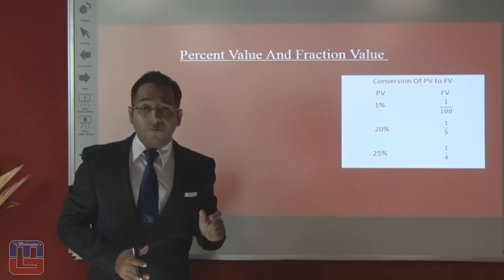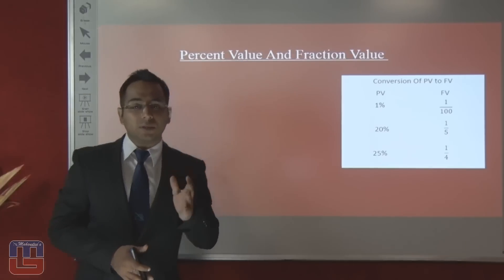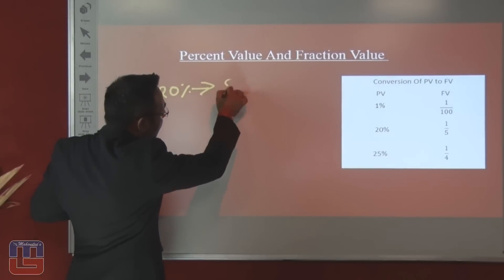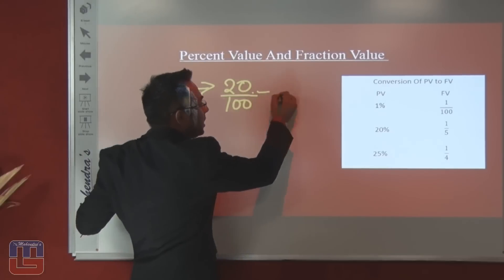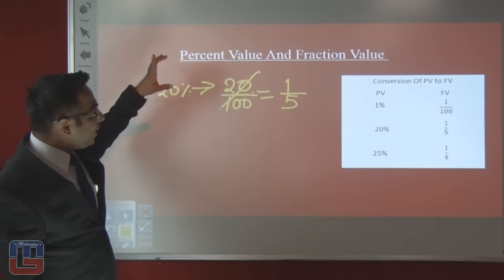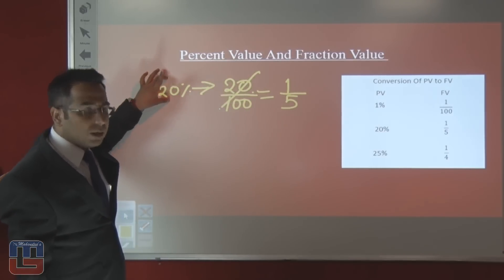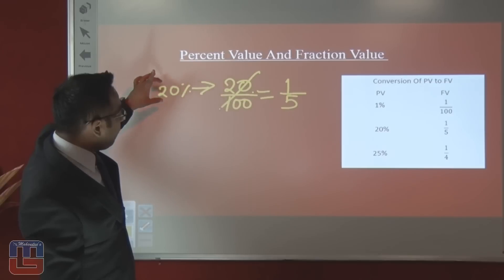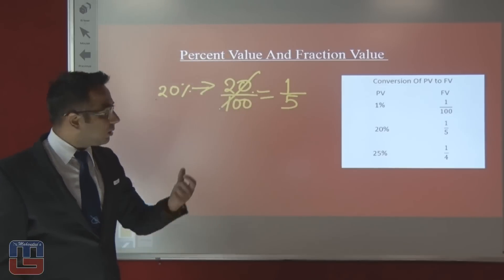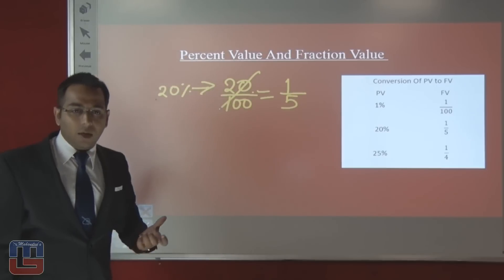The conversion between fraction value and percent value is simple. For example, 20% means 20 upon 100, which simplifies to 1 by 5 after cancellation. So 20% and 1/5 are the same thing — 1/5th of the whole value. We get this by removing the percent sign and dividing by 100.